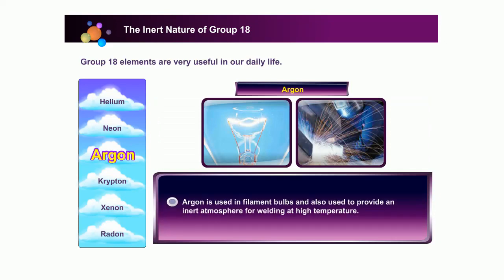Argon is used in filament bulbs to prevent the burning of the tungsten filament. It is also used to provide an inert atmosphere in welding work.